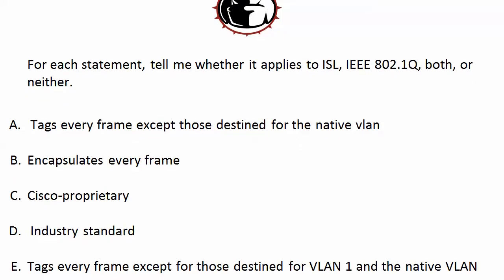Now about that last statement — watch this one, because E is neither. It says: tags every frame except for those destined for VLAN 1 and the native VLAN. The native VLAN by default is VLAN 1, but that's changeable. If you have heavy traffic on VLAN 20 and aren't using VLAN 1 for security purposes, you'd change your native VLAN to VLAN 20. In that case, .1Q would tag every frame except those destined for VLAN 20 — so E is a false statement and doesn't apply to either protocol.